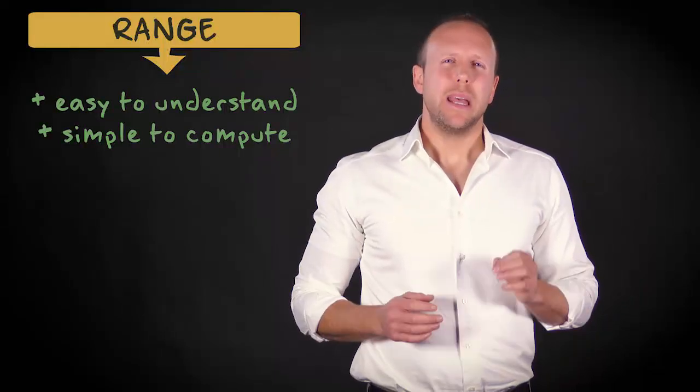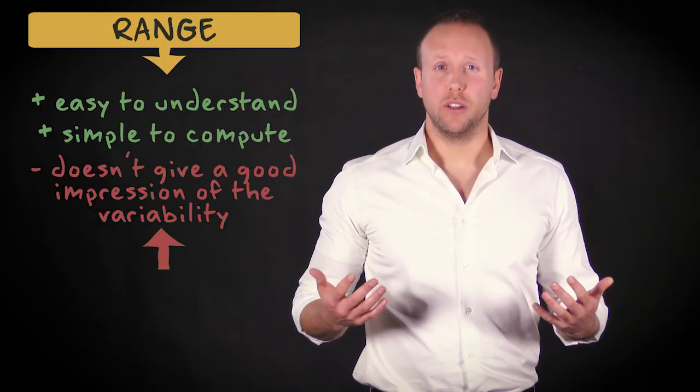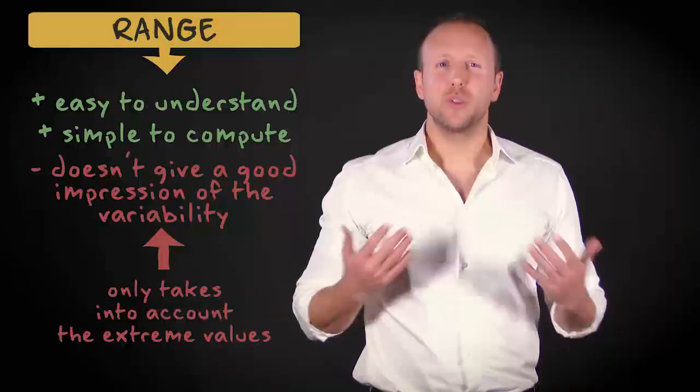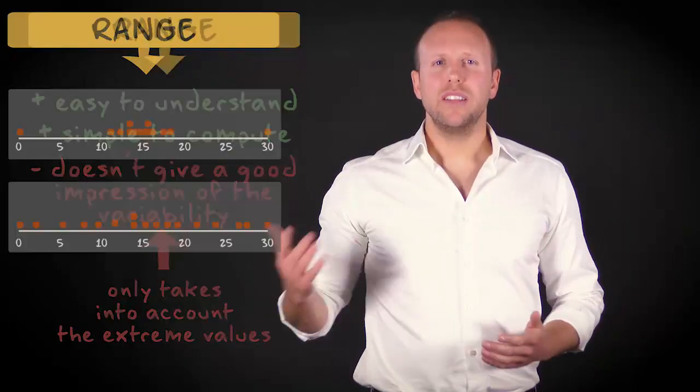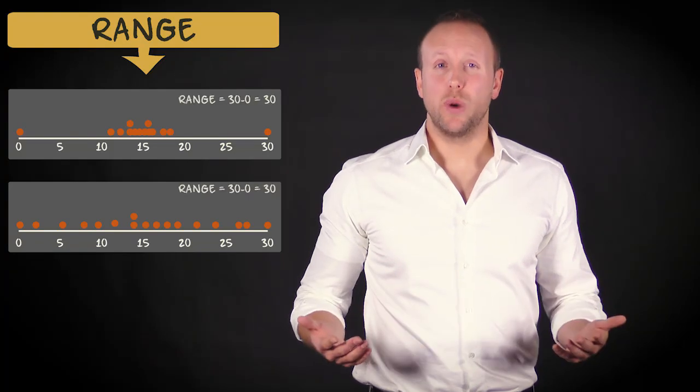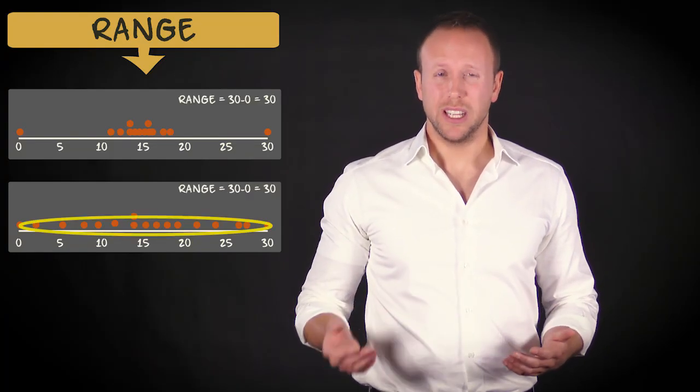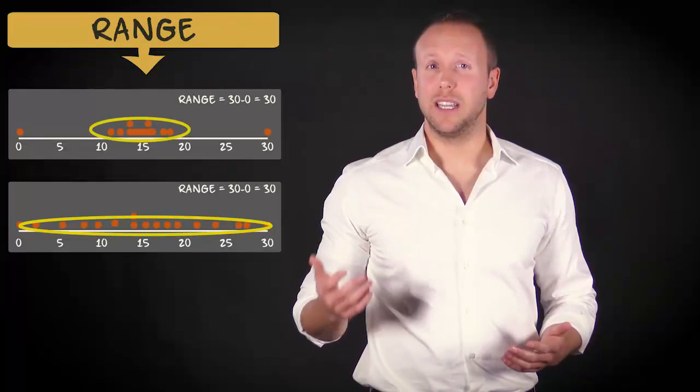However, in many cases it doesn't give a good impression of the variability of the data. The reason is that it only takes into account the extreme values. Look at these two distributions. They have the same range, but you can see immediately that the variability in the second distribution is very different from the variability in the first graph.